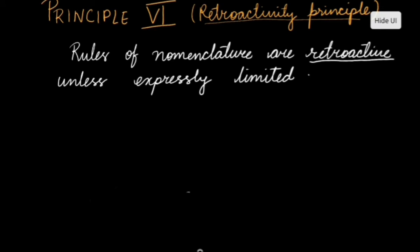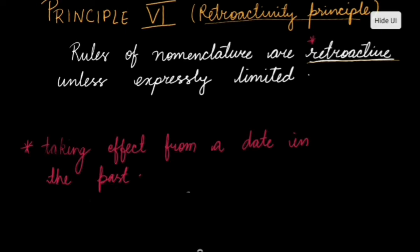Here's the sixth principle, which is also the last principle. It is called the retroactive principle, which basically states that rules of nomenclature are retroactive unless expressly limited. Retroactive is a legal term. Retroactive means it is a kind of law which takes effect from a date in the past. So which means that if a law is passed today, it can affect the decisions that were made in the past.